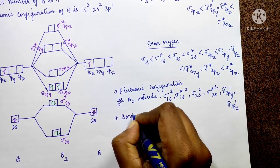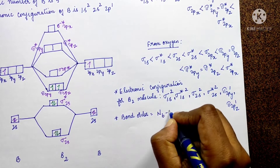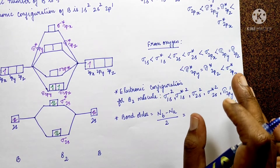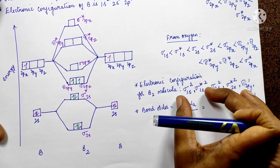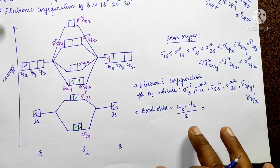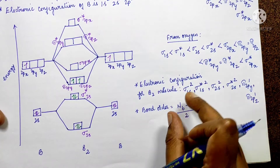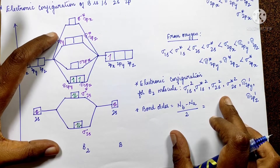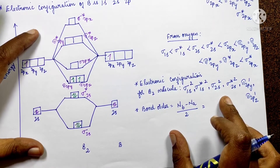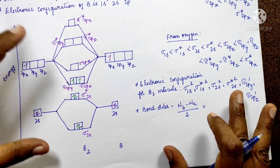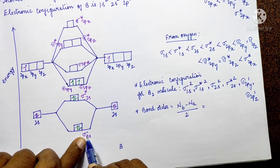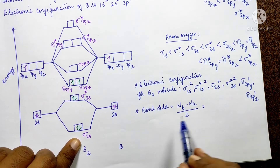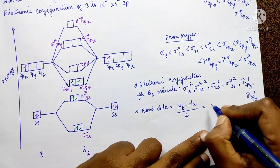Now we will calculate the bond order. The bond order formula is: Bond Order = (NB − NA) / 2, where NB is the number of bonding electrons and NA is the number of antibonding electrons. Counting the bonding electrons: NB = 4. Counting the antibonding electrons: NA = 2. So bond order = (4 − 2) / 2 = 1.